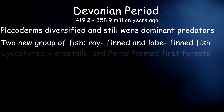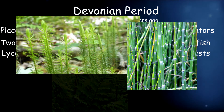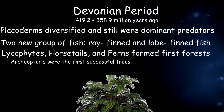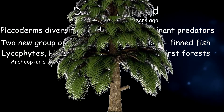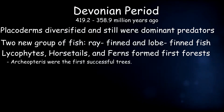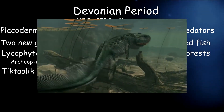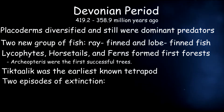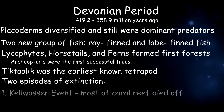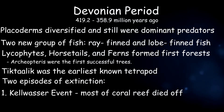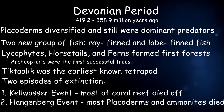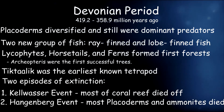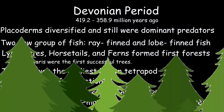As for plants, lycophytes, horsetails, and ferns grew to form the first forests. Archaeopteris were the first successful trees; they grew 90 feet tall and 3 feet wide. For land life, the earliest known tetrapod was the Tiktaalik, which was linked to lobe-finned fish and early amphibians. There were two episodes of extinction: the Kellwasser event, where most of the coral reefs died off, and the Hangenberg event, where most Placoderms and Ammonites died. Researchers think this had to do with atmospheric changes caused by the growing forests.